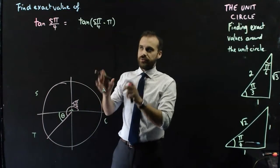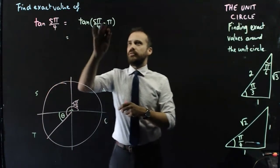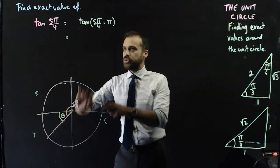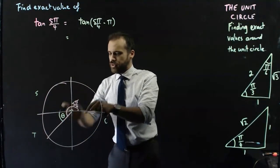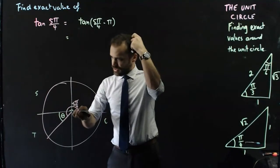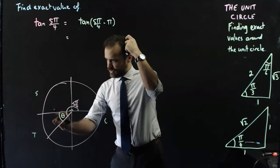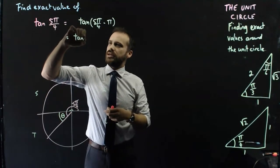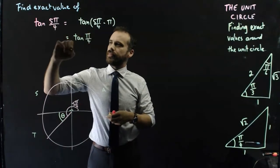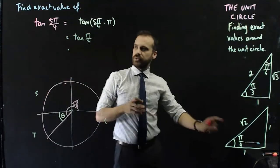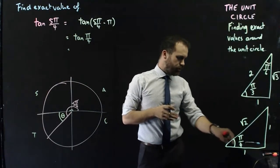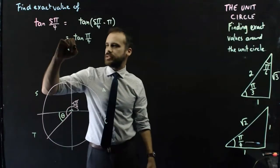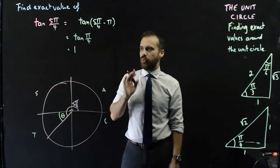So 5 pi on 4 minus pi is just pi on 4. You can eyeball it — if that was 5 pi on 4, this extra bit's just pi on 4. So that's tan pi on 4. Pi on 4, opposite over adjacent, 1 divided by 1: the answer is 1.